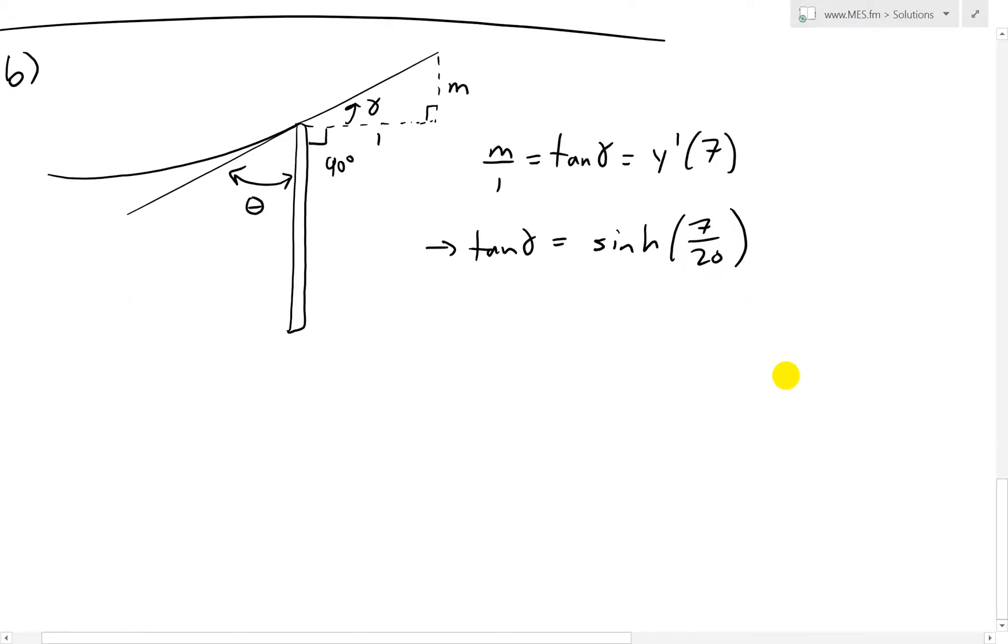So now that we have this, we can solve for gamma. That is just equal to the inverse tan of this right here, sinh 7 over 20, like that.